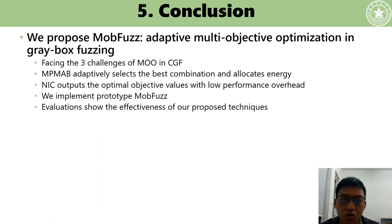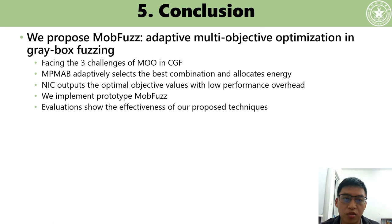In conclusion, our work addresses adaptive multi-objective optimization in coverage-guided fuzzing. We solved three challenges of multi-objective optimization in CGF. We proposed the MPMAB model to adaptively select the best objective combination and allocate energy, and designed the NIC algorithm to output optimal objective values with low performance overhead. Based on these two key components, we implement the prototype MOB-Fuzz. Extensive evaluations show the effectiveness of our proposed techniques. Thank you for listening.